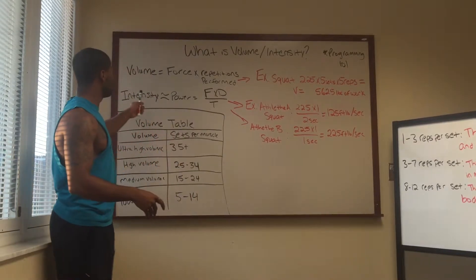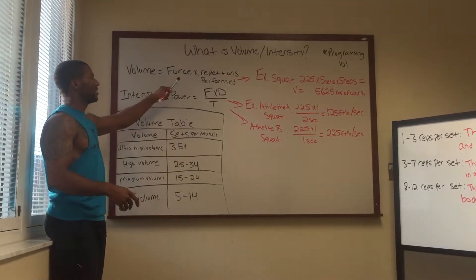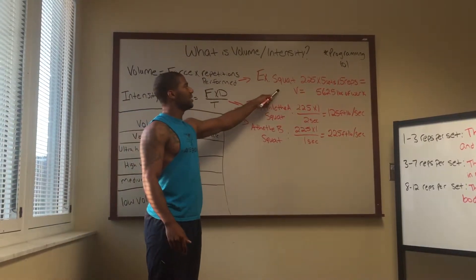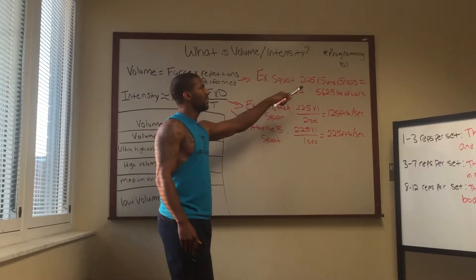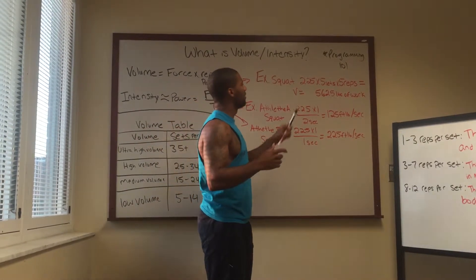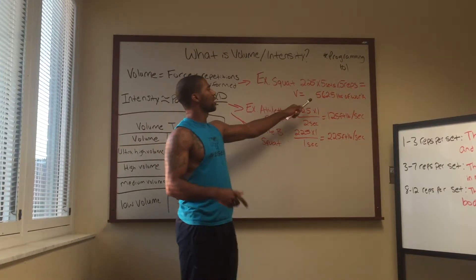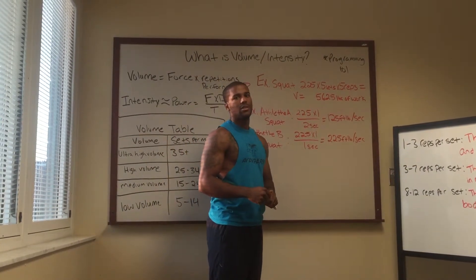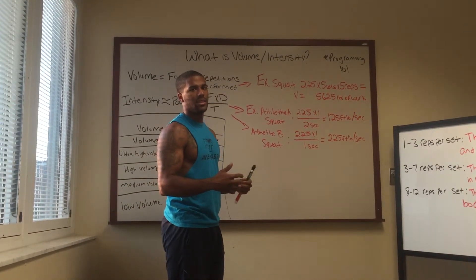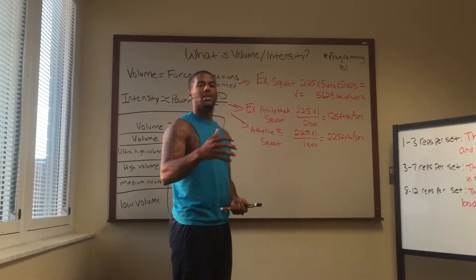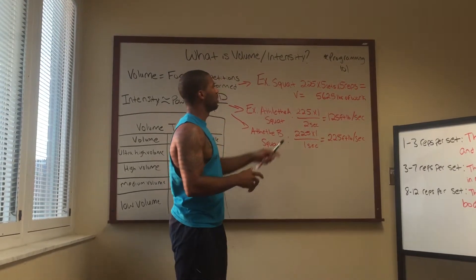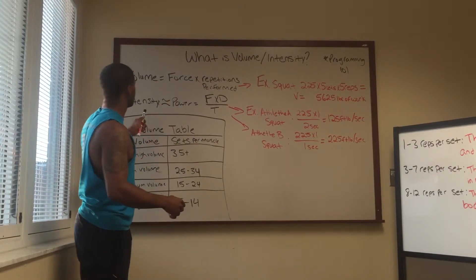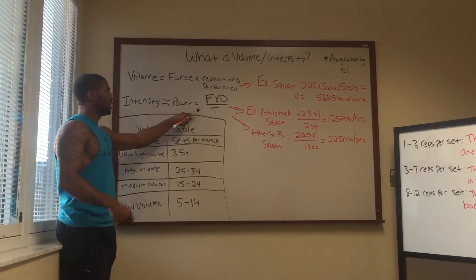Volume equals force times the repetitions performed. So my example here is: if an athlete squats 225 pounds for five sets of five reps, the amount of volume and work that he put in would be 5,625 pounds. You always have to take into account how much volume is based on what you did for that day.